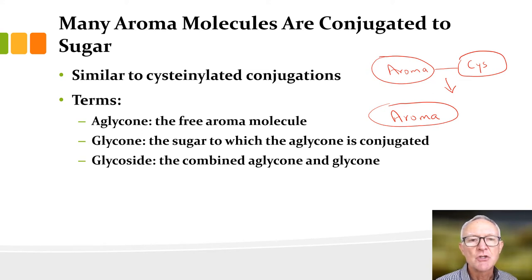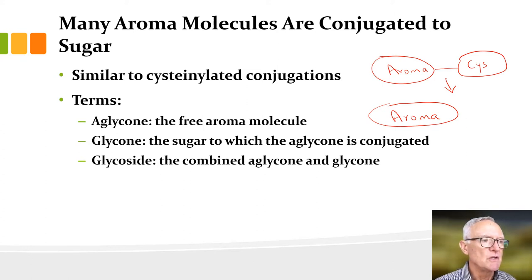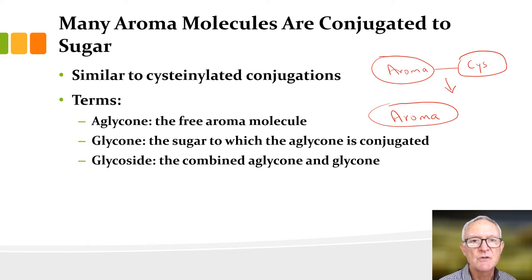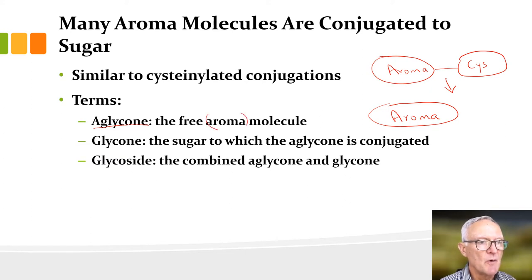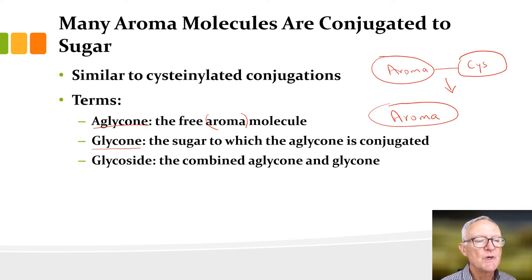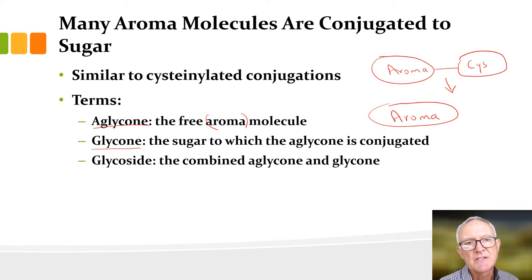Similar to conjugation to cysteine, lots of things are conjugated to sugars. Typically it's glucose, but it can be a polysaccharide or sugars other than glucose as well. We have three terms when talking about these conjugated molecules. The aglycone is the free aroma molecule — usually we're talking about aroma molecules when we talk about conjugation, but not always. The glycone is the sugar to which the aglycone is conjugated — so that could be glucose, a disaccharide, galactose, or another sugar such as a pentose.